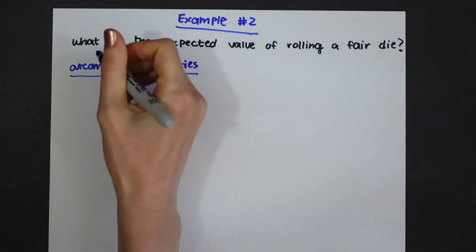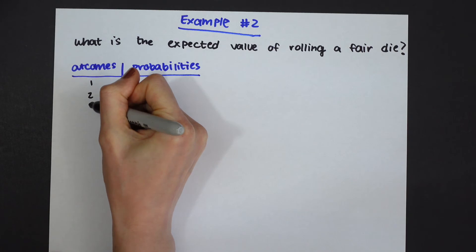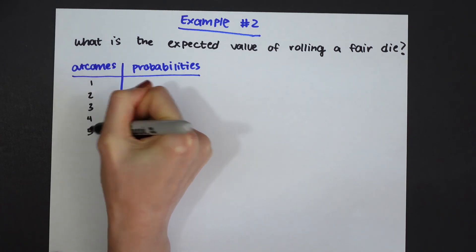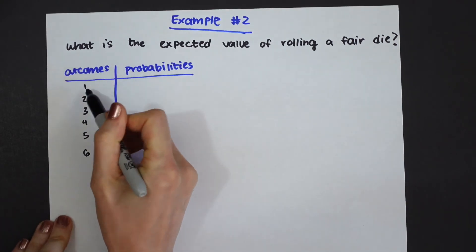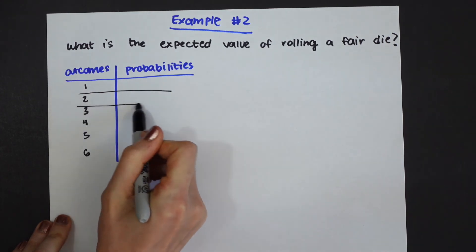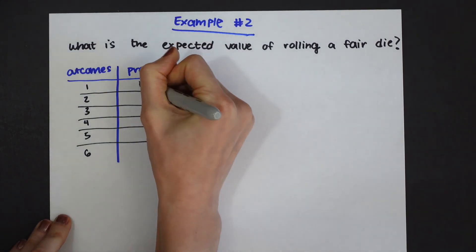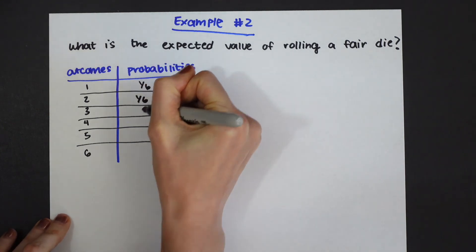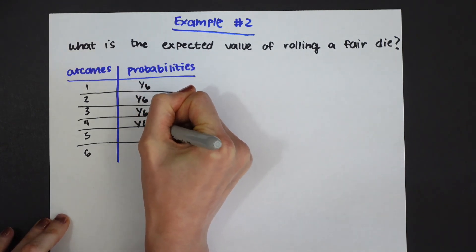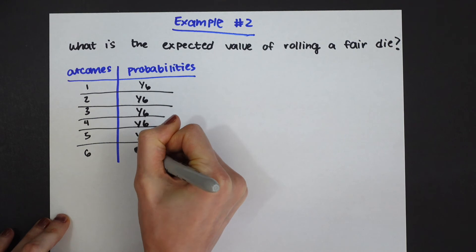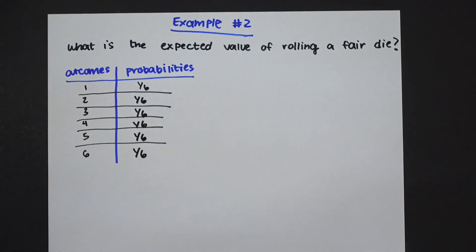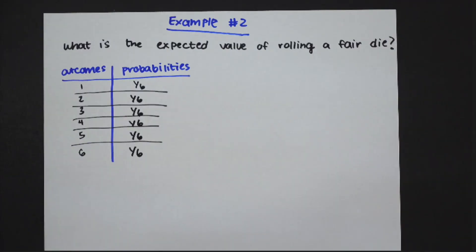When you roll a die you can get a one, a two, three, four, a five, or a six. And the probabilities of getting each of these rolls is of course one out of six, right? Because we have one outcome based on all the six probabilities and it's a fair die so we know that each has an equal chance of happening.